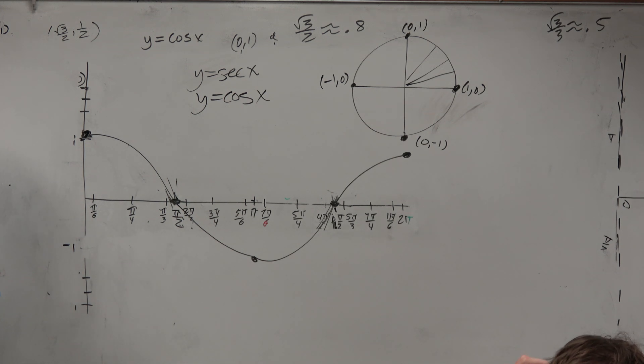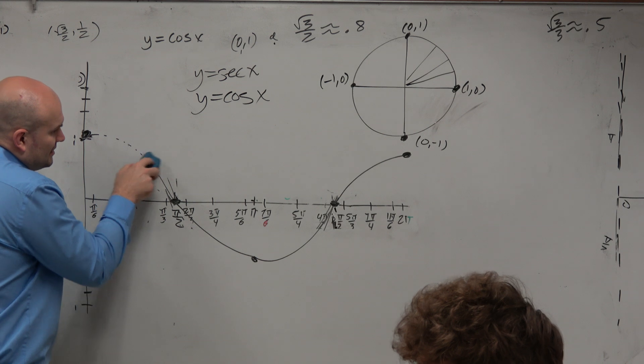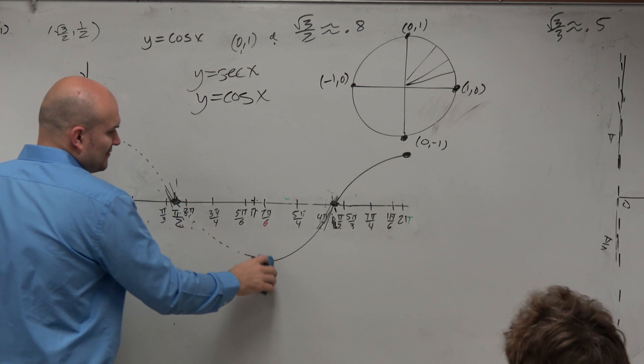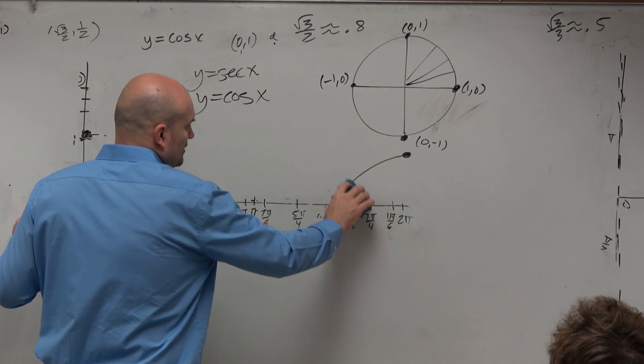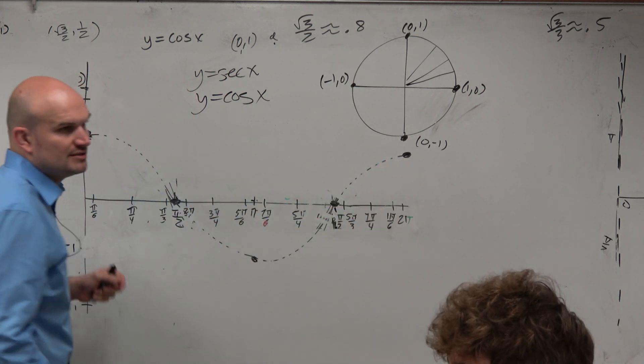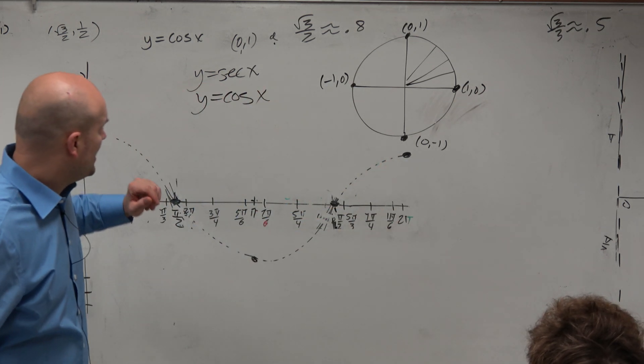Now, actually, since I'm graphing secant, I don't want to confuse our secant graph with the cosine graph. So I'm just going to dash it, OK?